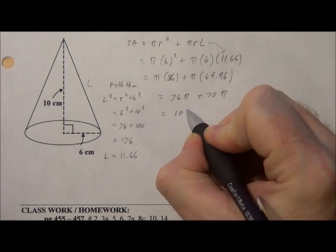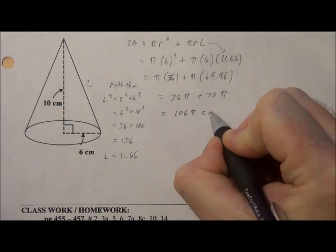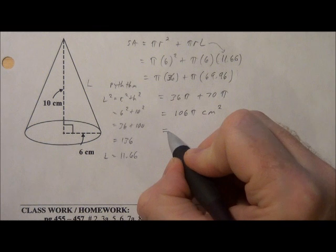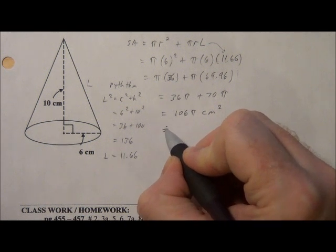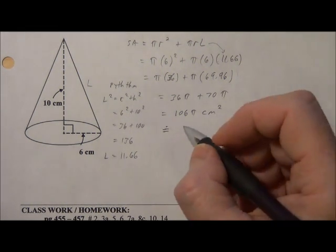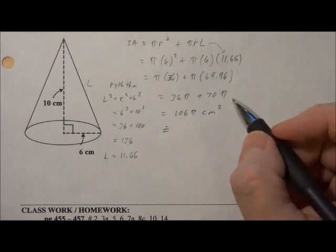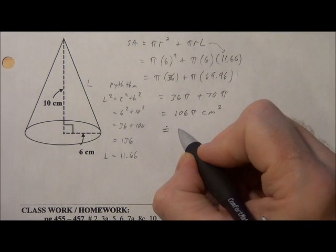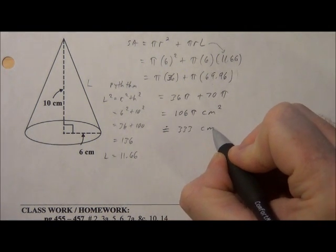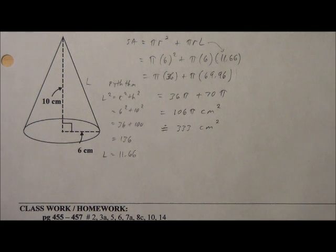And that gives us 106 pi square centimeters for the surface area. And if you really like to change things into decimals, please, for the pi, use the pi button and not just 3.14. And so we've got 333 square centimeters. That one actually kind of worked out nicely.